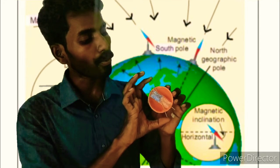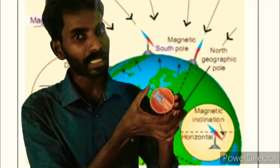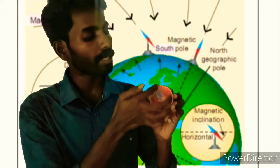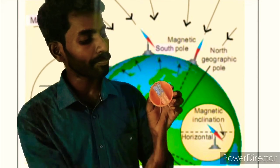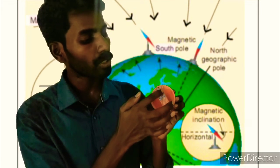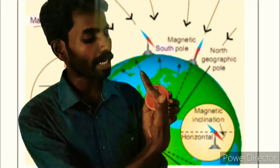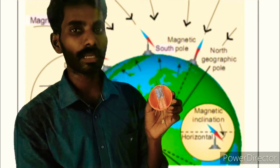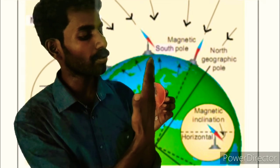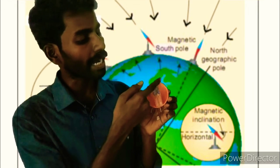This is the axis of rotation, this is the magnetic axis. This is the geographic meridian axis and this is the magnetic axis. This is the geographic meridian — this is the magnetic meridian axis.